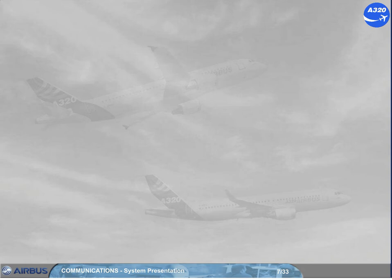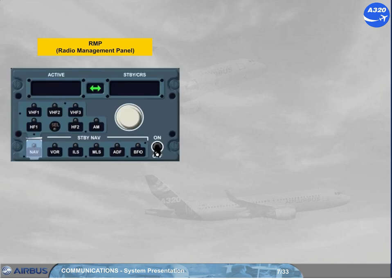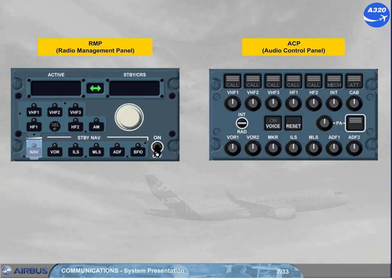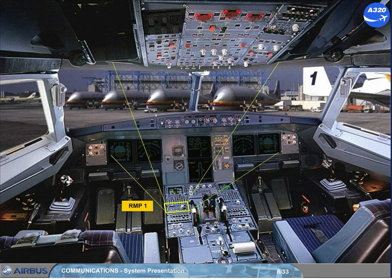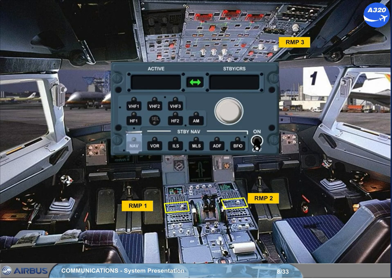Control of all radio communications is achieved through radio management panels, RMPs, and audio control panels, ACPs. There are two RMPs located on the center pedestal, and an optional third one on the overhead panel. They are used to tune all radios. Note: RMP 1 and 2 can also be used as backup for nav-aid tuning in case of failure of both FMGCs — see ATA 34 navigation chapter.